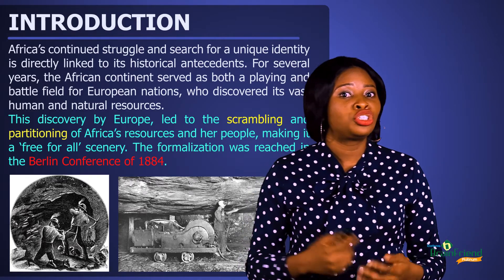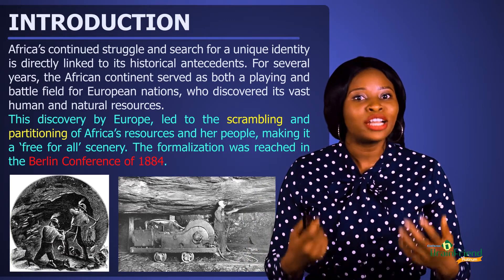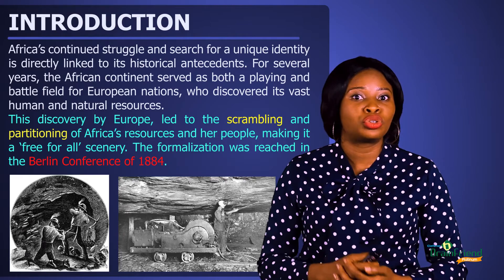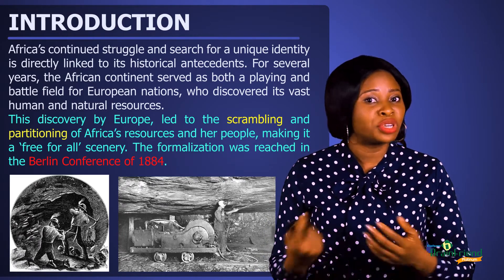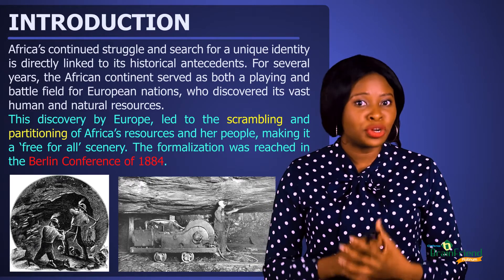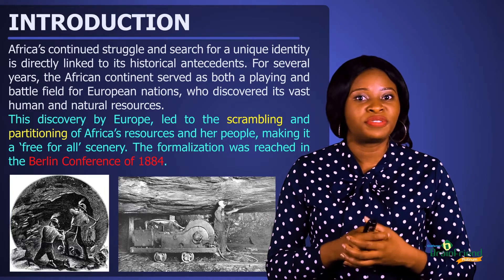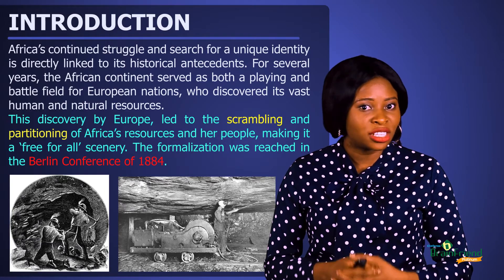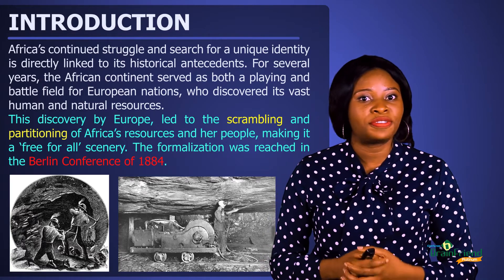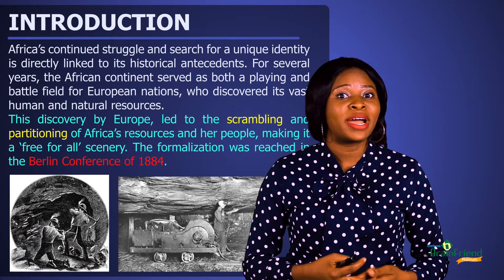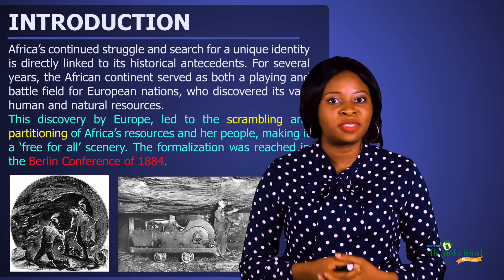In order to prevent European nations from having conflict among themselves, Africa had to be free for all European nations to trade in. The formalization for the scramble of Africa and her resources was reached and agreed upon during the Berlin Conference, which took place on the 15th of November 1884 and lasted to the 26th of February 1885. This conference was organized by Germany's first Vice-Chancellor, Otto von Bismarck.